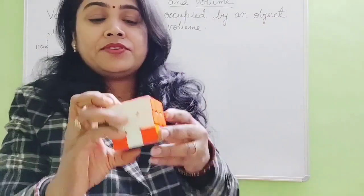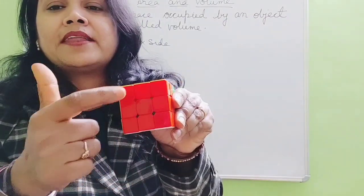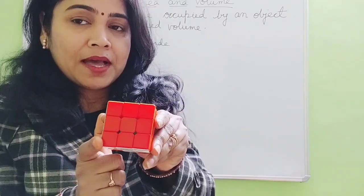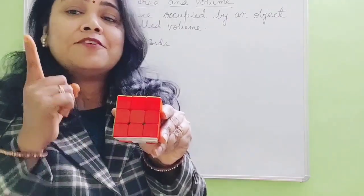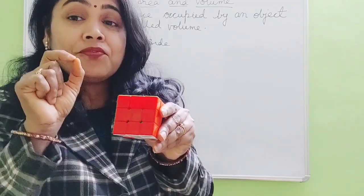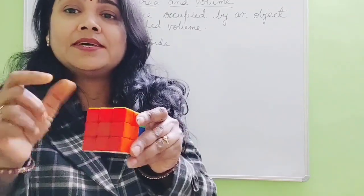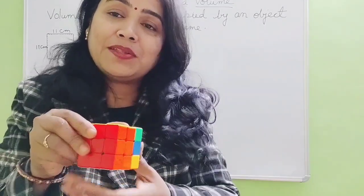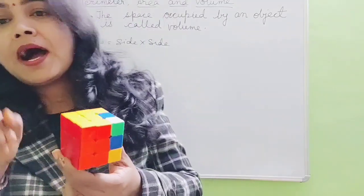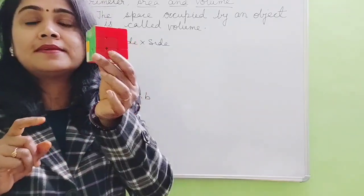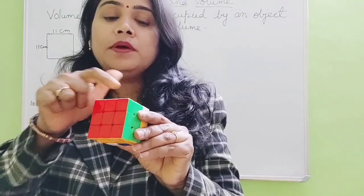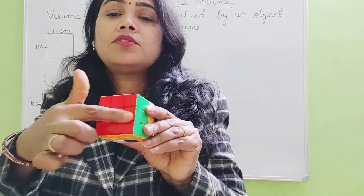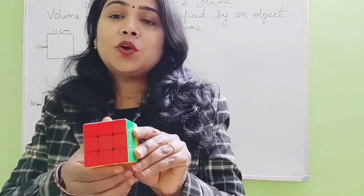Just like in area we were imagining how many squares are there — and by counting squares you found area — in volume you will have to find how many cubes fit in that space, because the cubes have height also. Counting the cubes: 3, 3 is 6, 3 is 9 — so 9 cubes are there on one face.